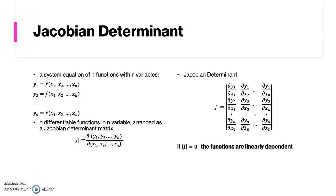If the Jacobian determinant is equal to 0, then the system equation has linear dependency.